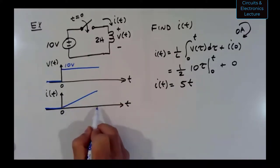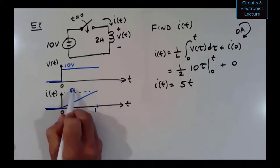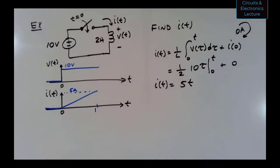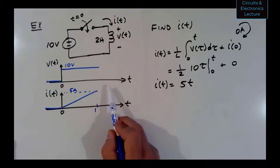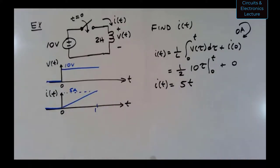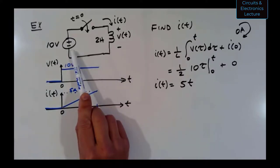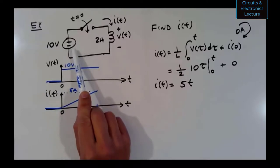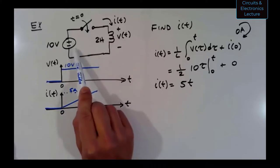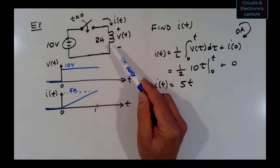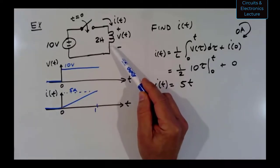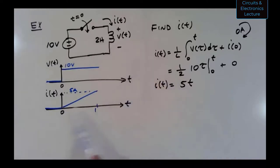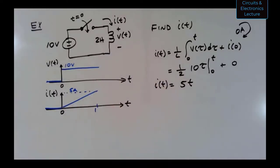This isn't great in practice — I wouldn't recommend building this circuit because theoretically the current keeps increasing toward infinity. In reality, the power supply hits its current limit, or more likely the wire has resistance and would get hot and burn out. It's not a good idea to close a switch and keep current flowing through an inductor from a voltage source like this.